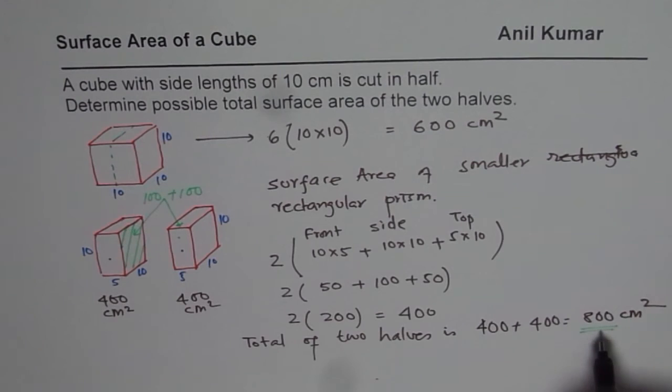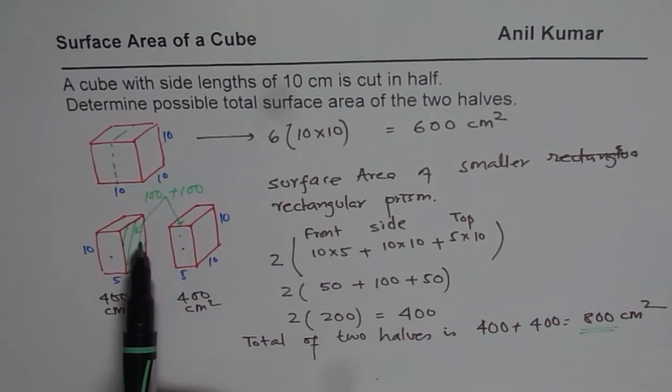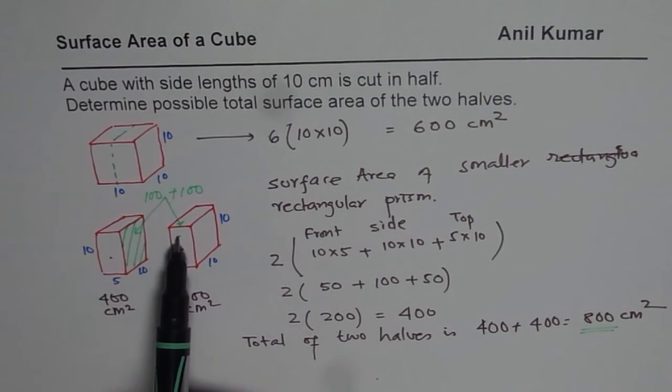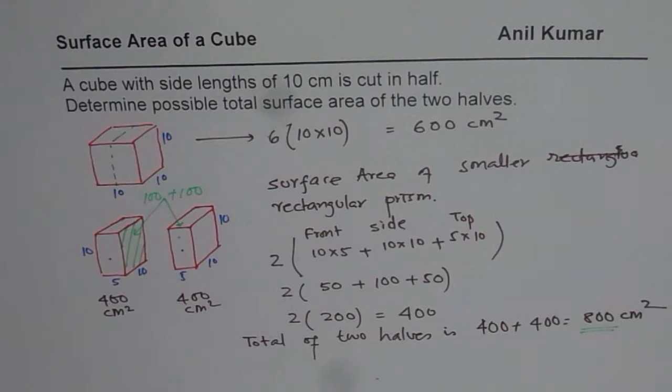So that is the increase in surface area in our case and therefore we find an increase by 200. Do you see that? So that is how you can justify your answer. When you cut open, you expose two more surfaces and their area combined is 100 plus 100. And therefore the area increases by 200 and you get surface area of 800 cm square in this particular case.